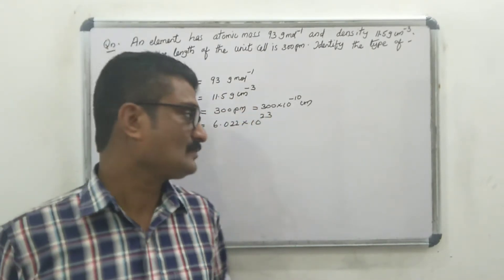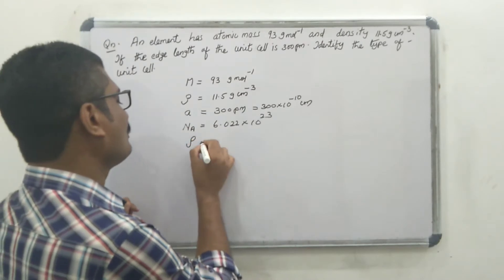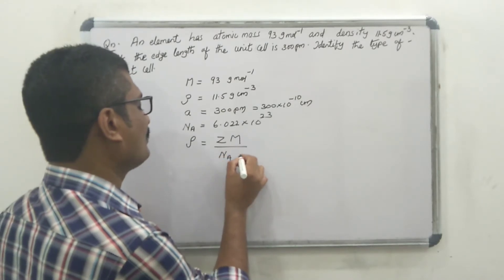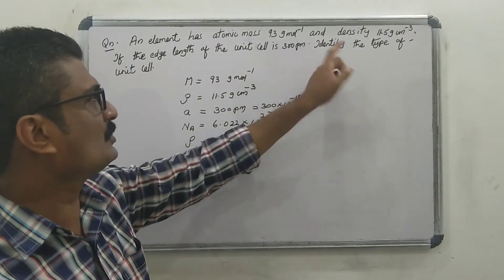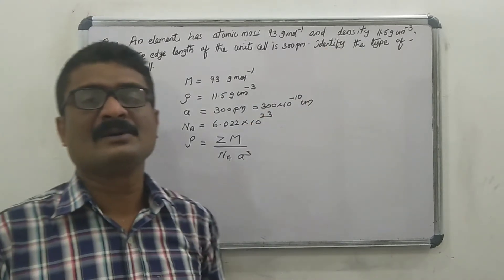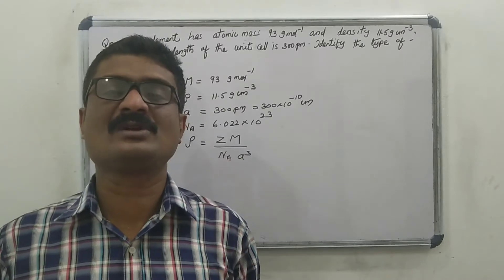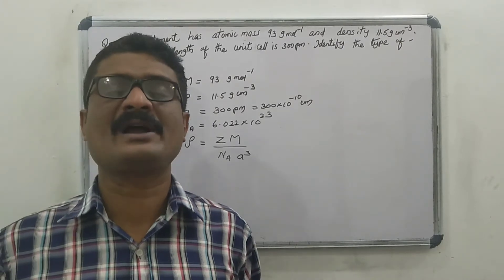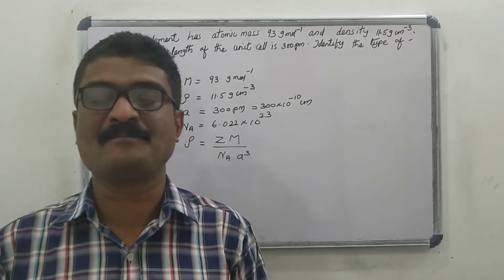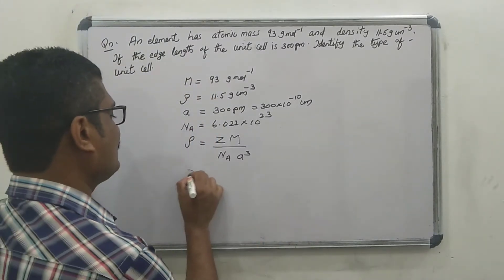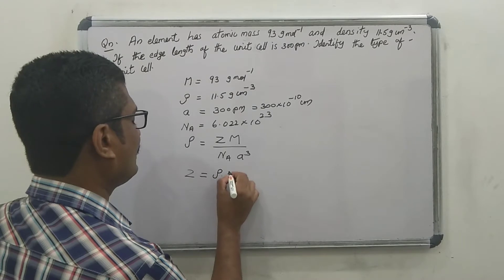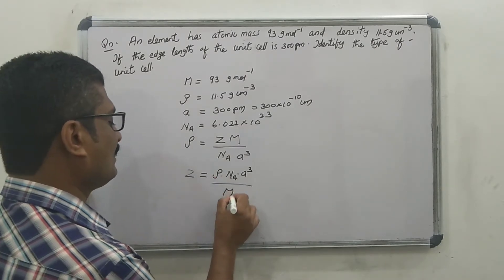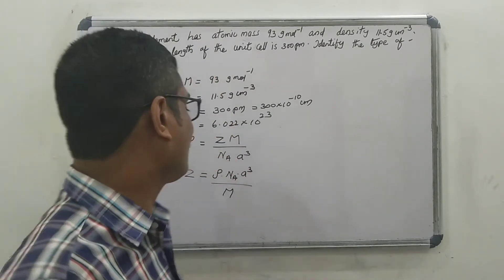The density of the unit cell formula is: rho equals Z into M divided by Avogadro number into A cube. We need to identify the type of unit cell, so we solve for Z. Z equals rho into N_A into A cube divided by atomic mass.